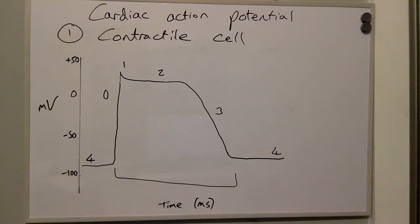In this video, I'm going to talk about the cardiac action potential of a contractile cell. The action potential of contractile cardiac myocytes has five phases, characterized by a stable resting membrane potential and a prolonged plateau phase.